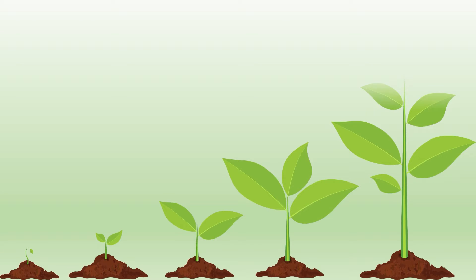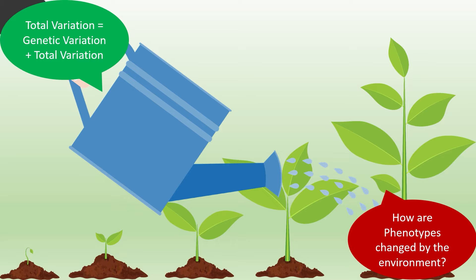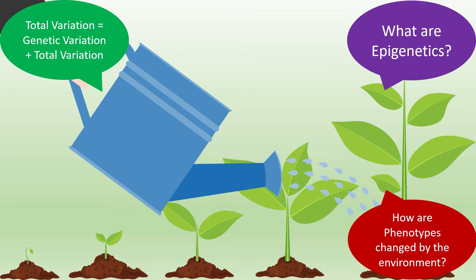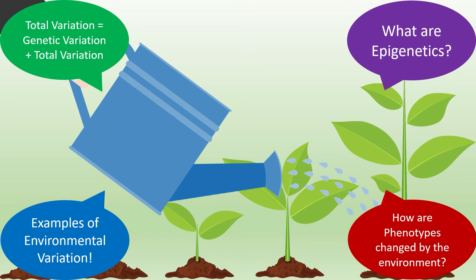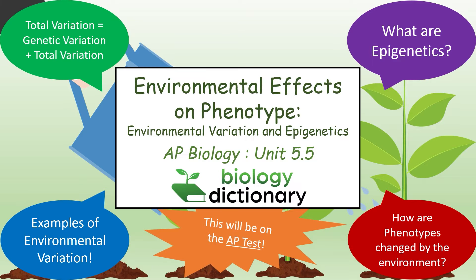Environmental effects on variation account for a large portion of the variation seen in most traits. Some environmental variables simply change the phenotype without altering the genotype in any way, while other environmental variables actually alter the way DNA is expressed. These concepts will definitely be on the AP test, so follow along as we break down the complex effects that the environment has on various phenotypes.